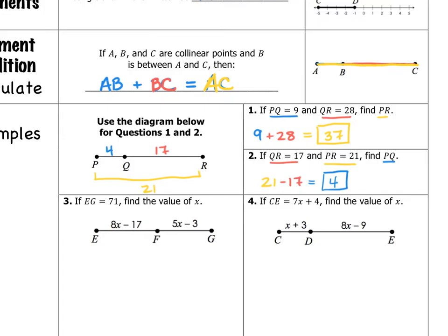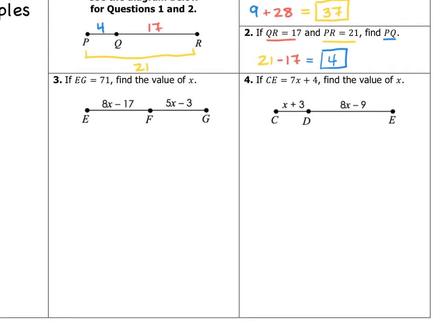The other way we can solve these problems involving the Segment Addition Postulate is by using algebra, and that's what you'll see more often in these examples. Number three: we have some variables involved, so we're going to use our basic equation-solving skills. If line segment EG has a measure of 71 — the whole thing — find the value of X. EG is made up of segment EF, which measures 8X minus 17, and FG, which measures 5X minus 3. I'm going to add those two smaller segments together: 8X minus 17 plus 5X minus 3, and set that equal to 71.